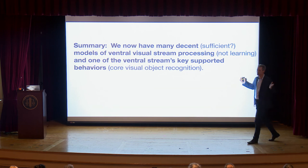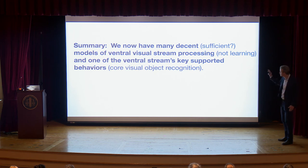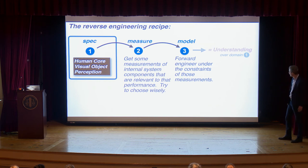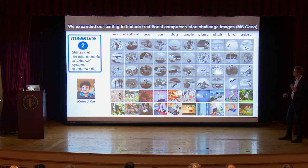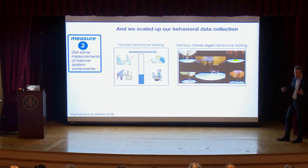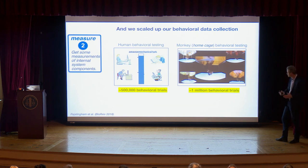Summary so far: we now have many decent, perhaps sufficient models of ventral stream processing — not the learning — and one of the ventral stream's key supported behaviors, core recognition. Now we're in an adversarial mode: we view our job as beating up on these models to show how they differ from the brain, driving the next generation of brain-like models. We get a lot of behavioral data and neural data.